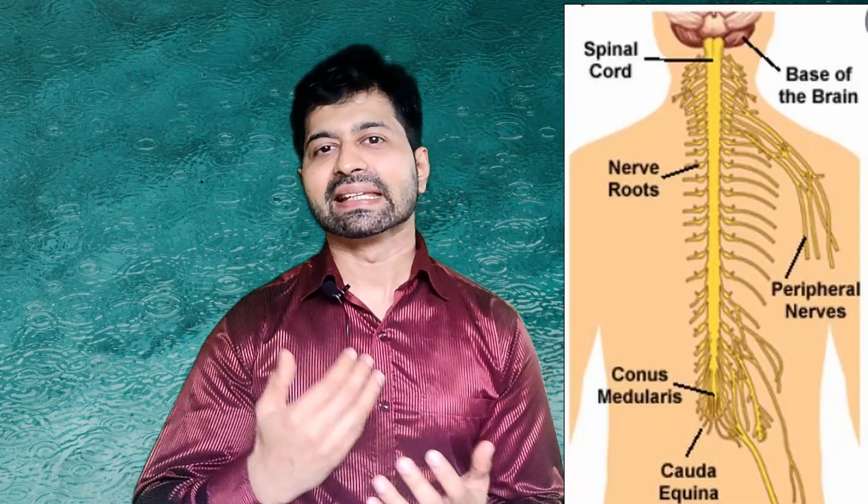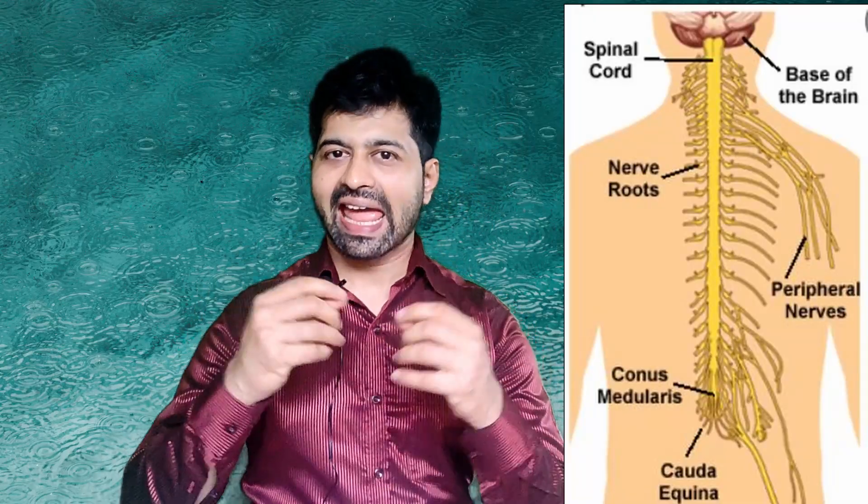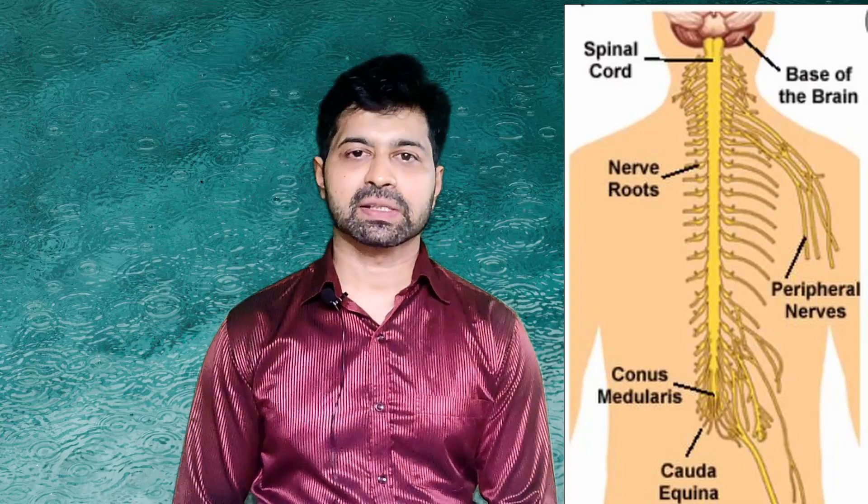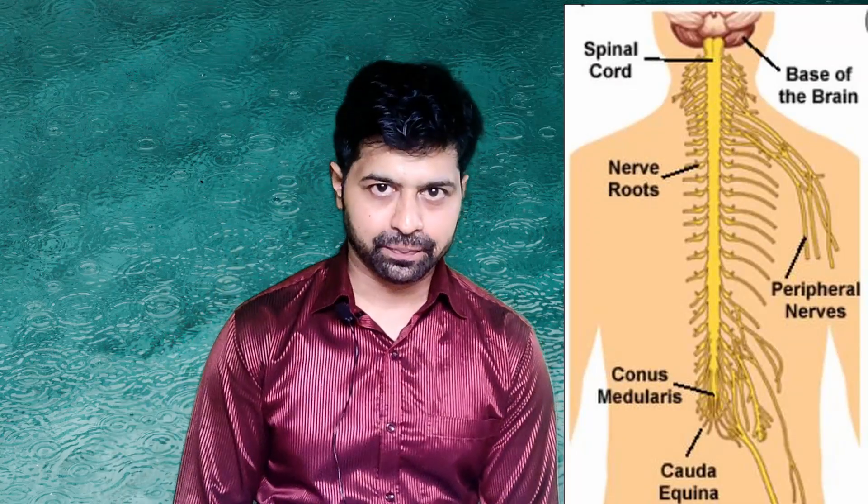So, before understanding about brachial plexus injury, obviously you need to know what is the meaning of brachial plexus. As you know, there are multiple nerve roots exiting from the spinal cord at each level. We label them as C1, C2, C3, C4, C5 based on the level from which they exit.